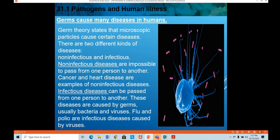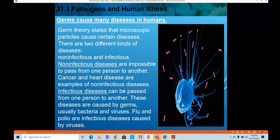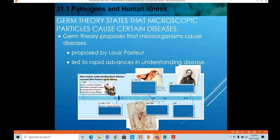All diseases that can be spread from one person to another — by touch, body fluids, or through air — are known as infectious diseases. Non-infectious diseases are impossible to pass from person to person by touch, air, or being in the same room. They can only be inherited through genes — meaning if your parents or ancestors have those diseases, you might also inherit them. Cancer and heart disease are examples of non-infectious diseases.